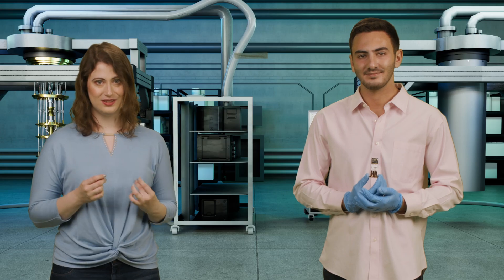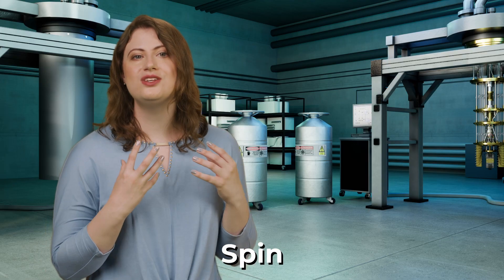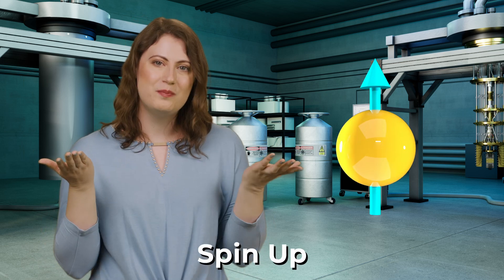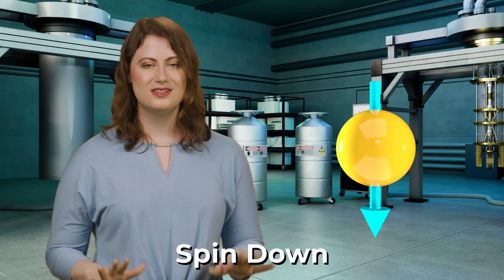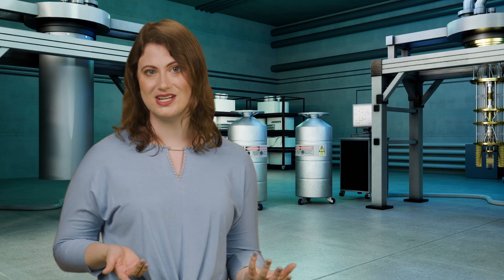To understand how we're going to get our zero and one out of this qubit, we first need to talk about spin. Spin is a property unique to quantum particles like electrons, protons, and neutrons. We say that a particle can either be spin up or spin down. And since those are quantum states, it can also be in a superposition of both spin up and spin down.